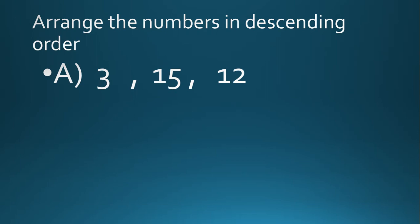Now you have to arrange the numbers in descending order — descending means biggest to smallest. First, what was the rule? First we will check the digits. If there is a one-digit number and the other numbers are two-digit numbers — you can see 3 is one digit, while 15 and 12 are two-digit numbers. So one-digit number is always smaller than two-digit numbers, which means 3 is the smallest.